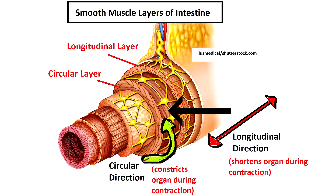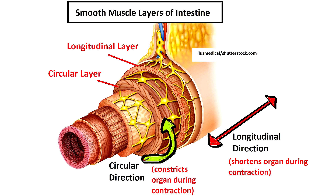There is also a circular layer, which is deep to the longitudinal layer and runs in a perpendicular direction to it. This forms around the organ circumference in a circular direction, and it narrows or constricts the organ during contraction. The stomach is unique in that it actually has a third layer of smooth muscle called an oblique layer, which helps to further break down food before it reaches the intestines.